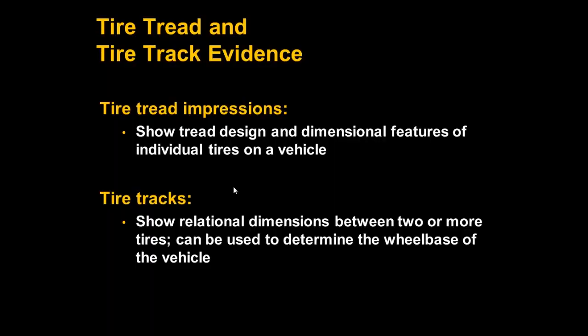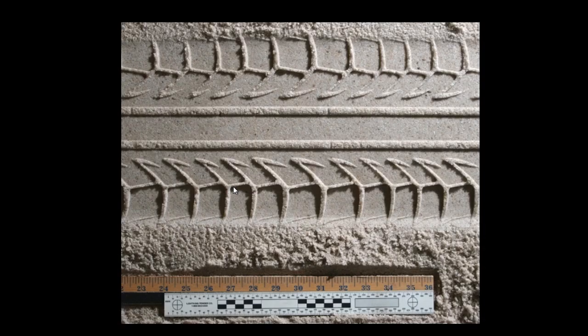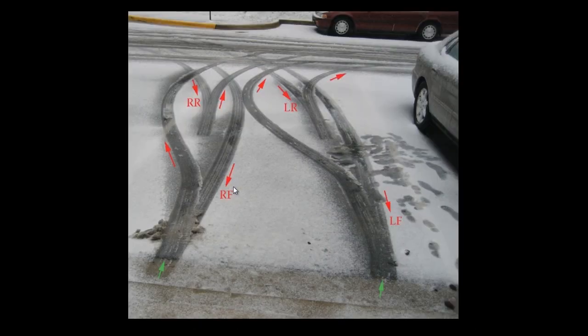Tire track evidence deals with the spatial relationships between two or more tires, which can be helpful when trying to determine the dimensions of the suspect car. This is an example of tire tread evidence where you're able to analyze the design features of an individual tire. This is an example of tire track evidence — as you can see here, you can look at the spatial relationships between two or more tires.